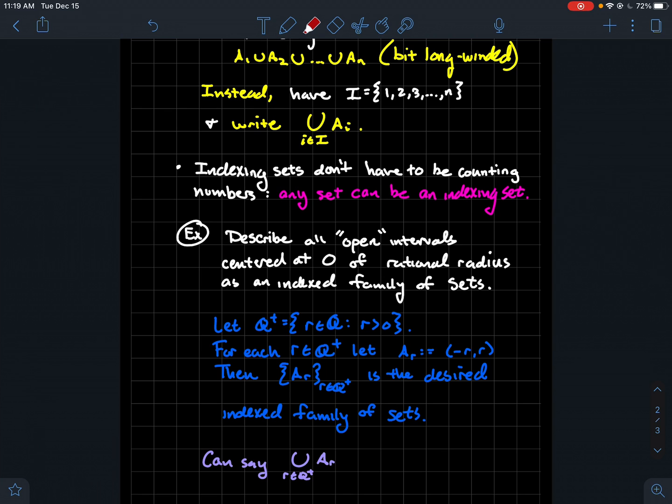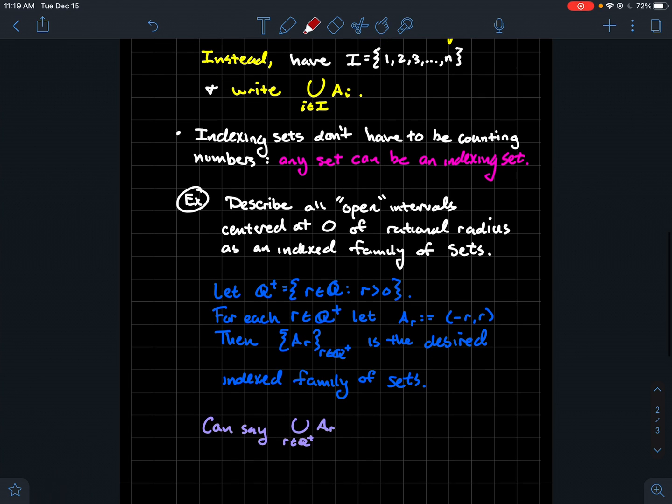Well, maybe some things that you might want to do is, if you've got all these open intervals that look like from -r to r, what's the union of all of those? And so if you take the union of all of those things, what you might think about is, each real number should be in at least one of those.